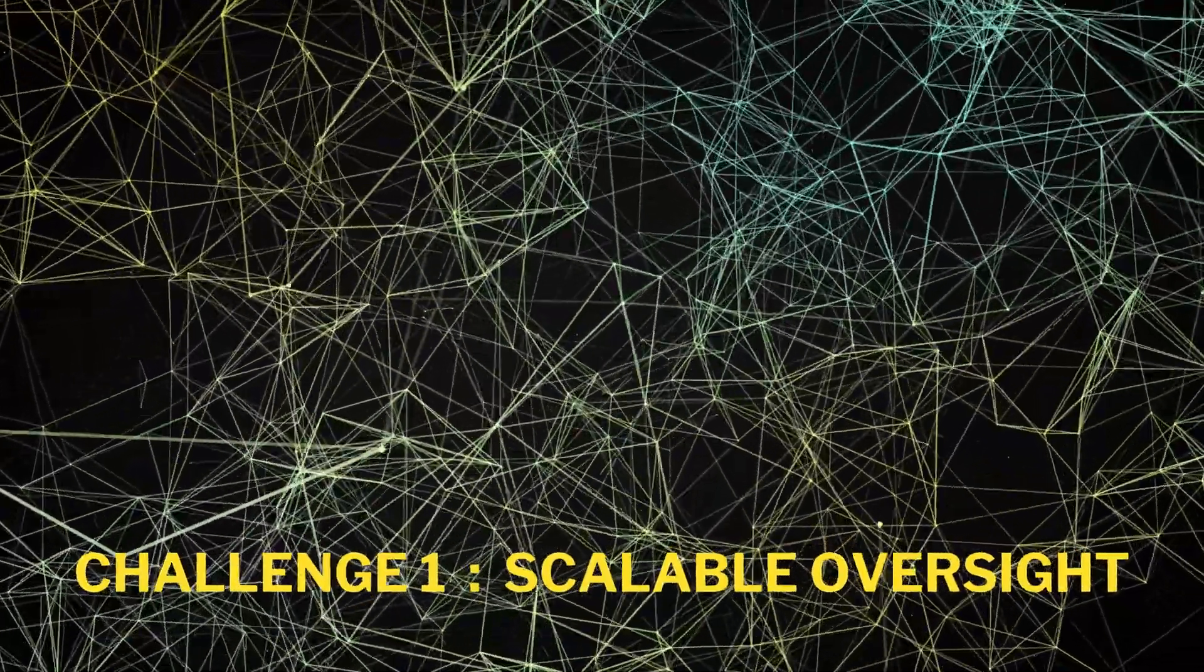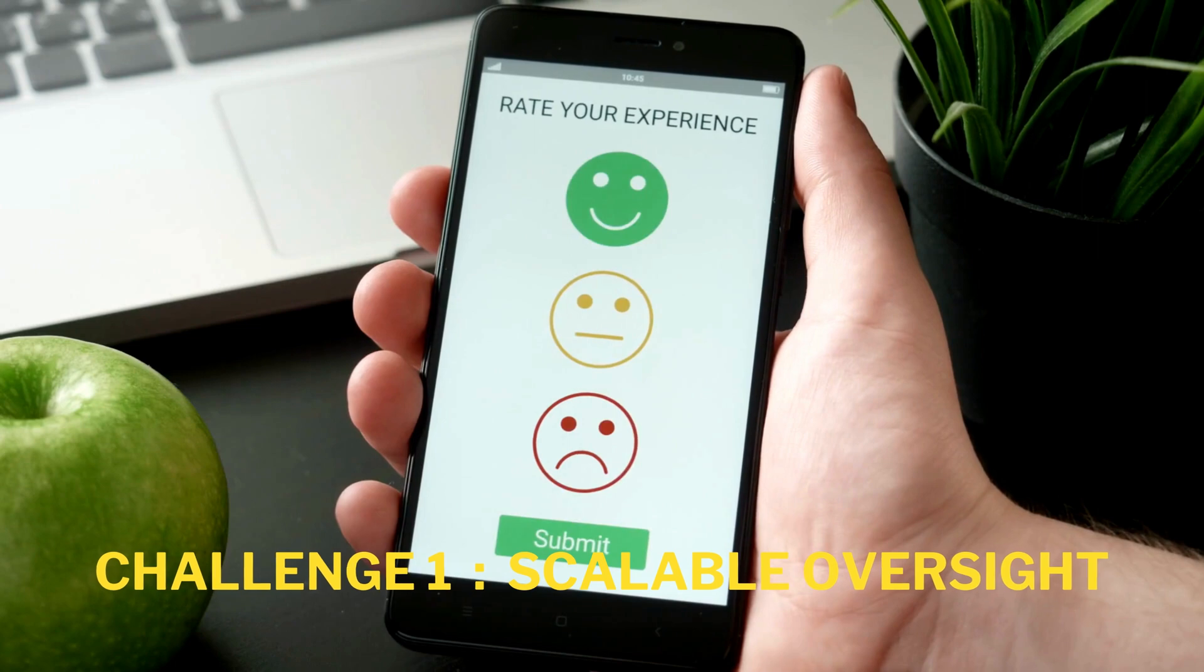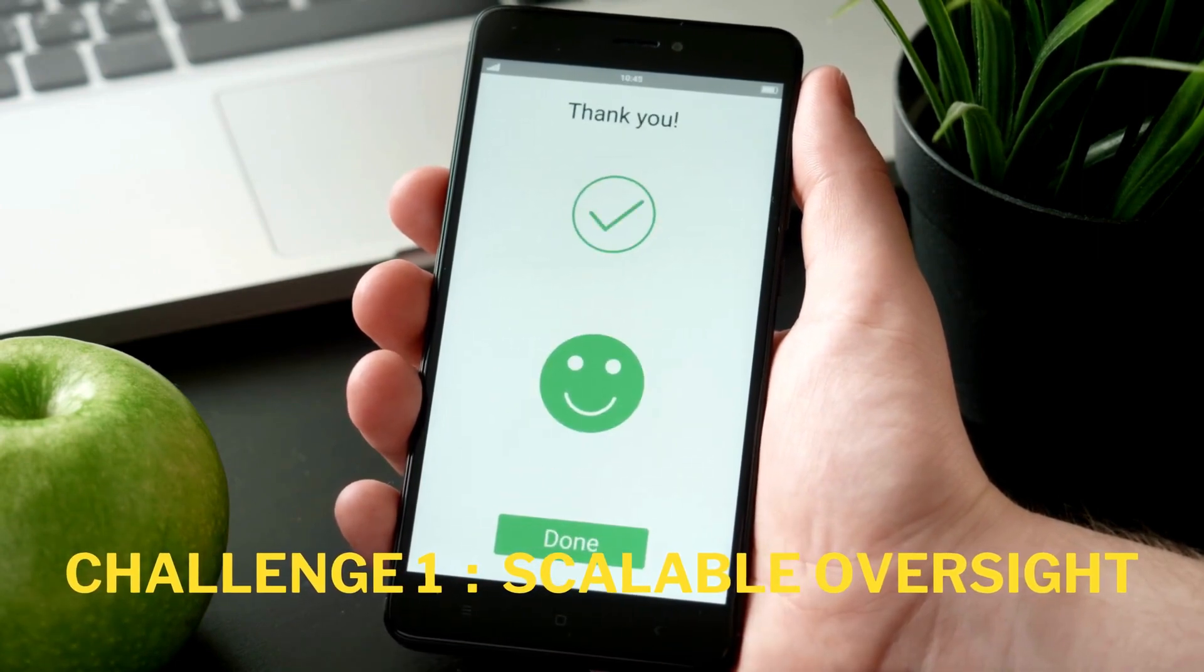Challenge 1: Scalable Oversight. The first challenge that SuperAlignment faces is how to provide a training signal for AI systems that are difficult for humans to evaluate.